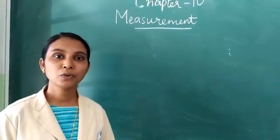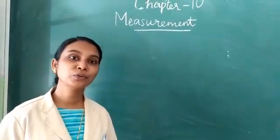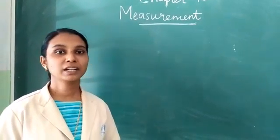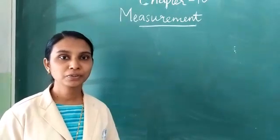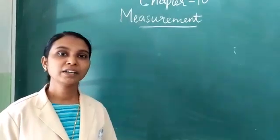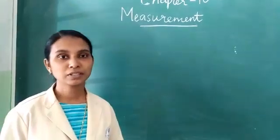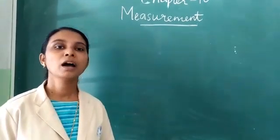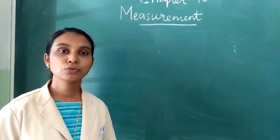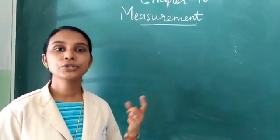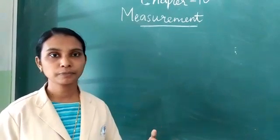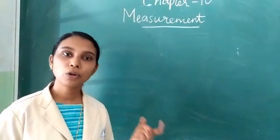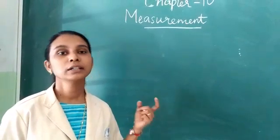If you want to buy a shoe, what do we do? You have to take the measurement of your foot, whether it is suitable to you. Then only we can buy a new shoe. For many things we have to take the measurement. That means to know how long or short things are. To find the length of an object, we should know how long or short things are.